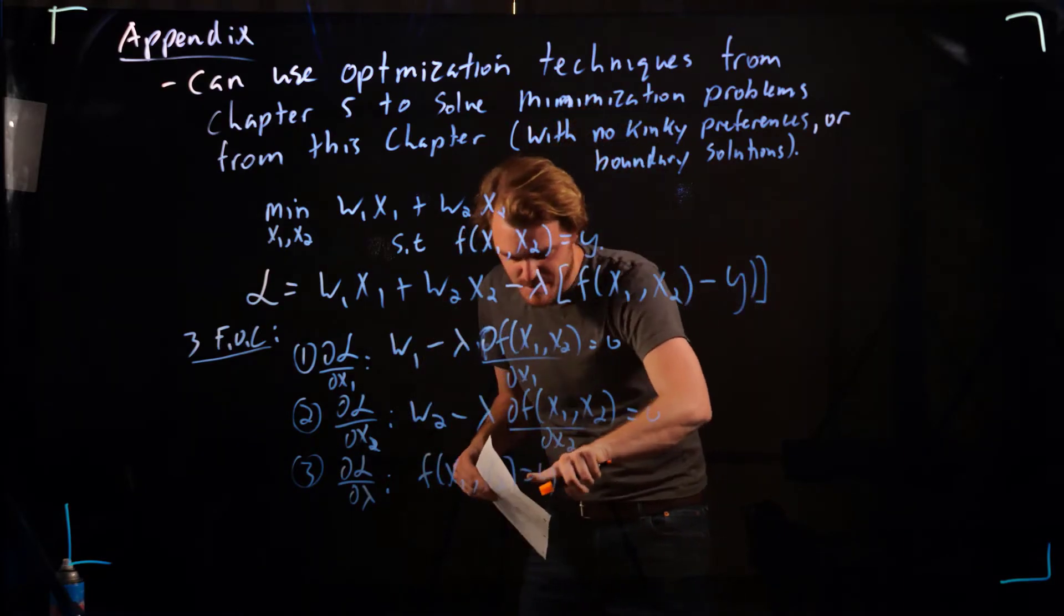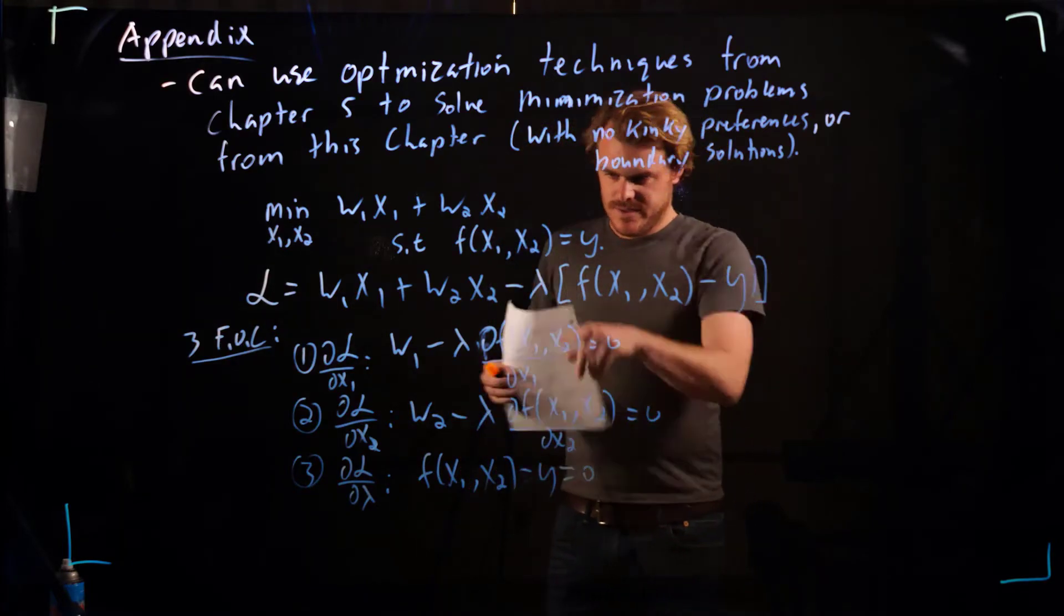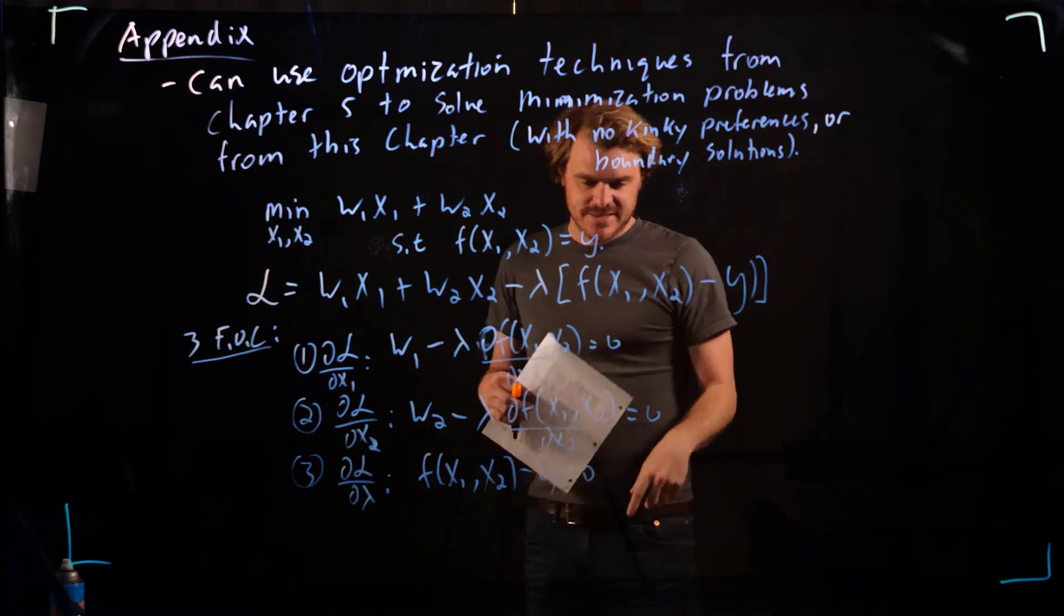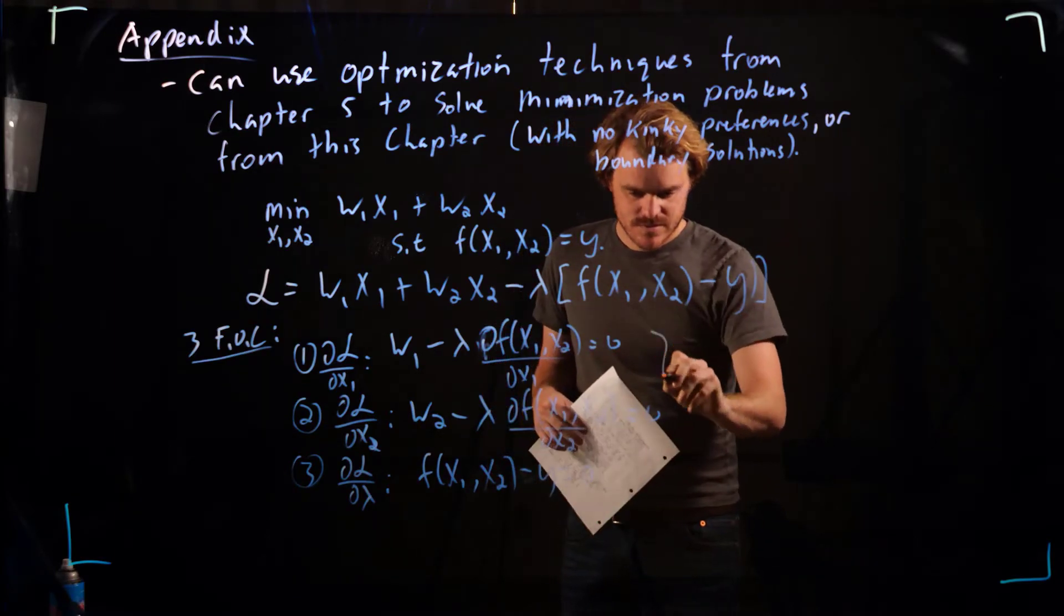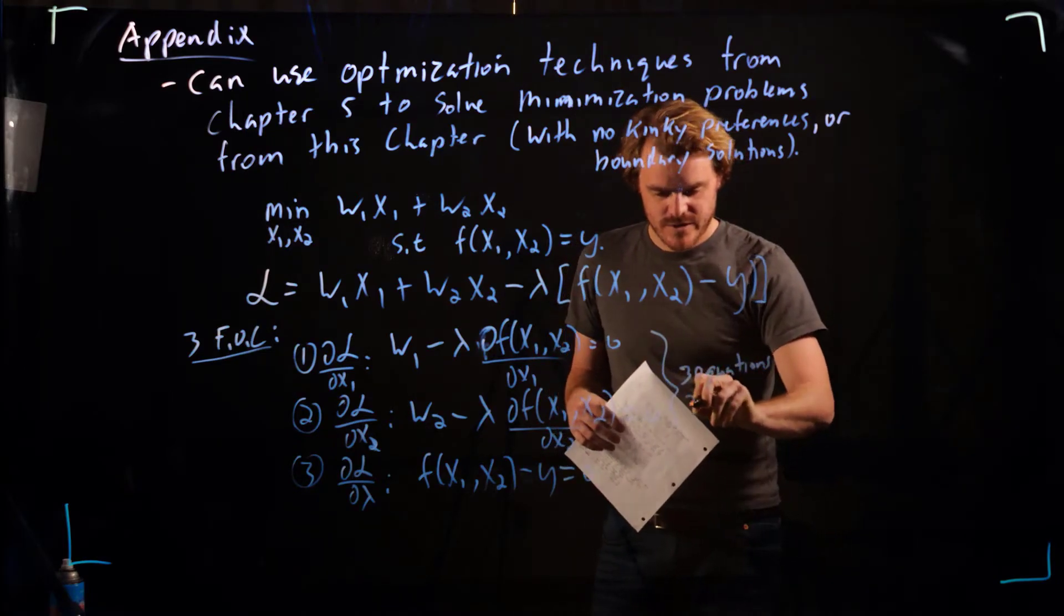Maybe I can say minus y equals zero. True, with respect to lambda, it's just everything in the brackets and in the first order condition, that's zero. So again, three equations, three unknowns.